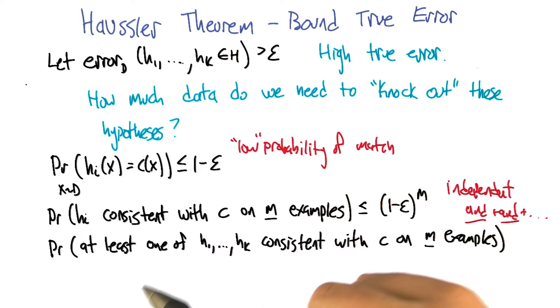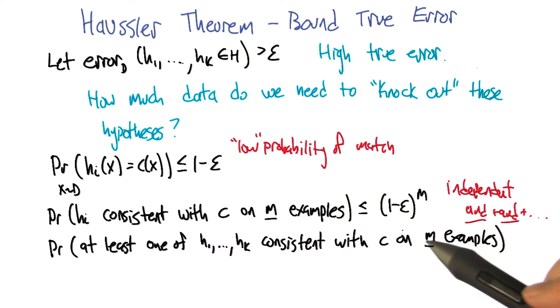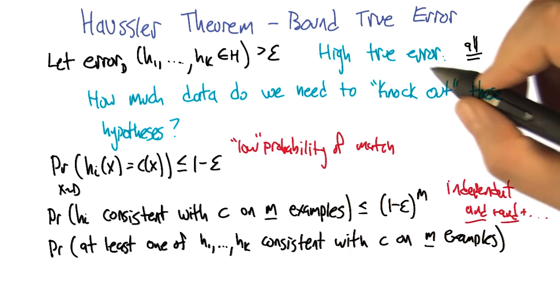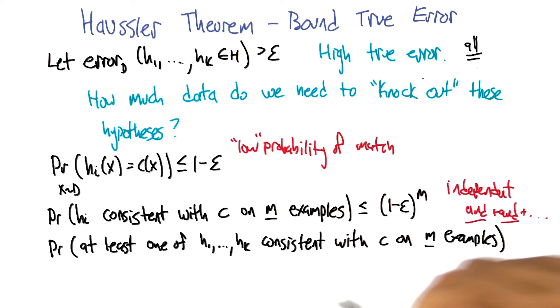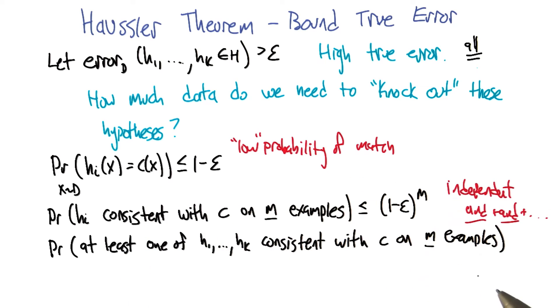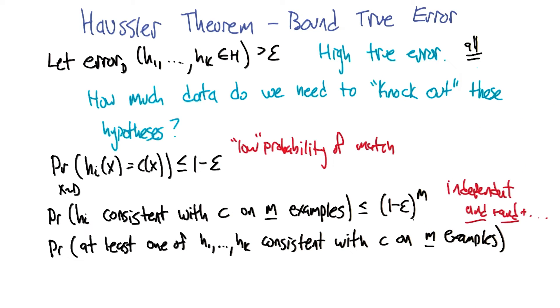All right, so can we use that to figure out what's the probability that at least one of these h1 through hk's is consistent with c on m examples. We have to knock them all out, right? That's really what the goal is, to knock out all the ones that have high true error. So we failed at that if one of them still slips through, one of them still looks consistent and remains in the version space. So what's the probability that at least one of these remains consistent? I think I know that.